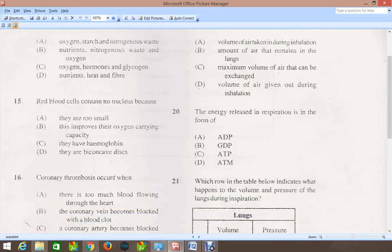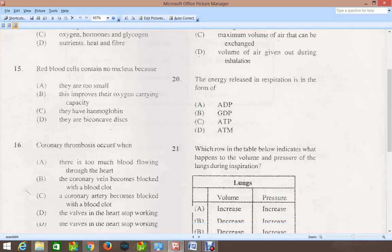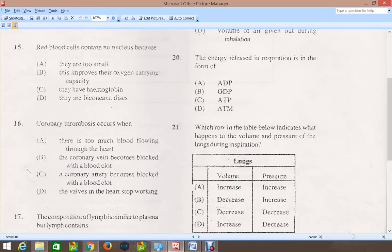Question 15: Red blood cells contain no nucleus because, and the correct answer for that is C, hemoglobin. That is because hemoglobin would take up a lot of space in the red blood cells.